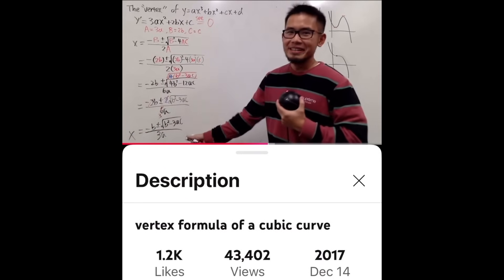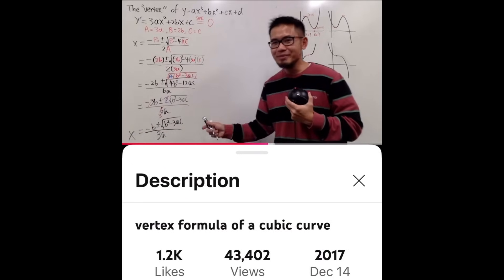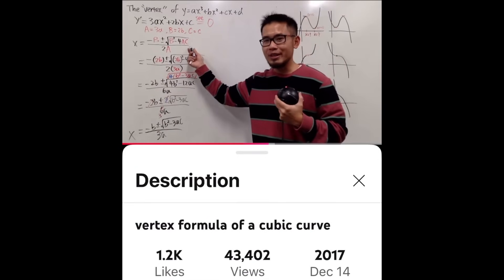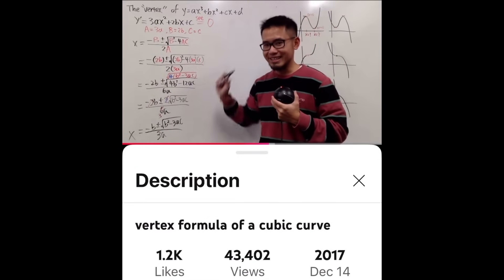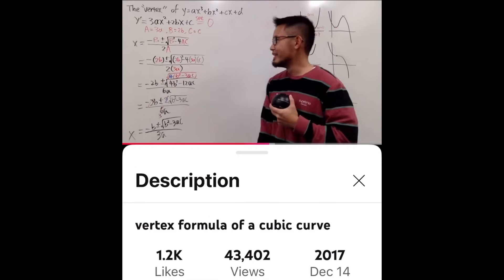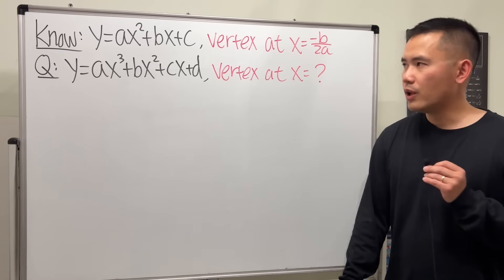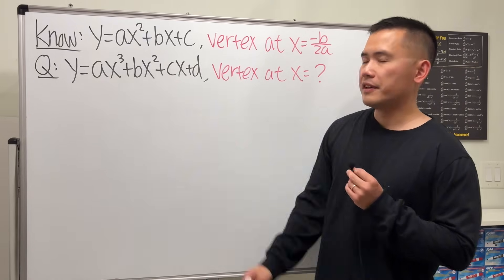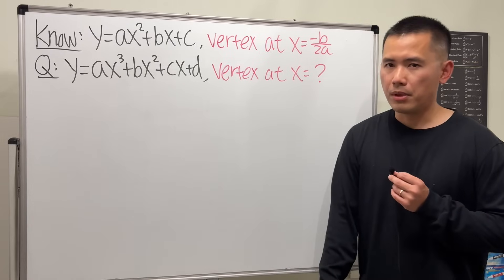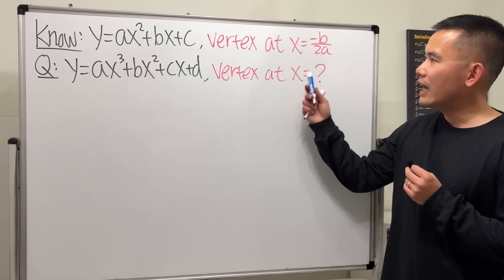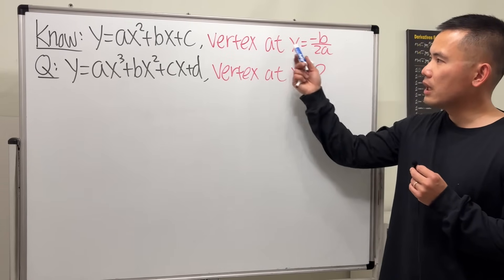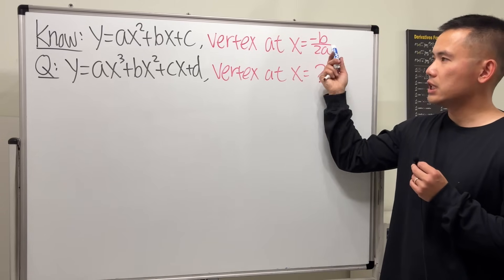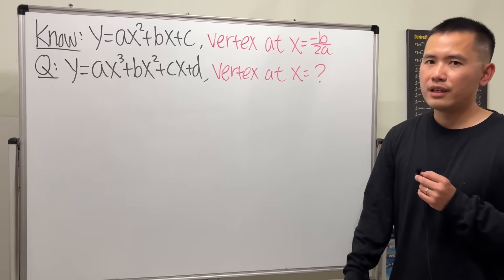This right here is really similar to the good old quadratic formula, isn't it? As we all know, this is a quadratic equation, and the graph of it is just a parabola. And we have a very nice formula for its vertex — it's just x equals negative b over 2a.